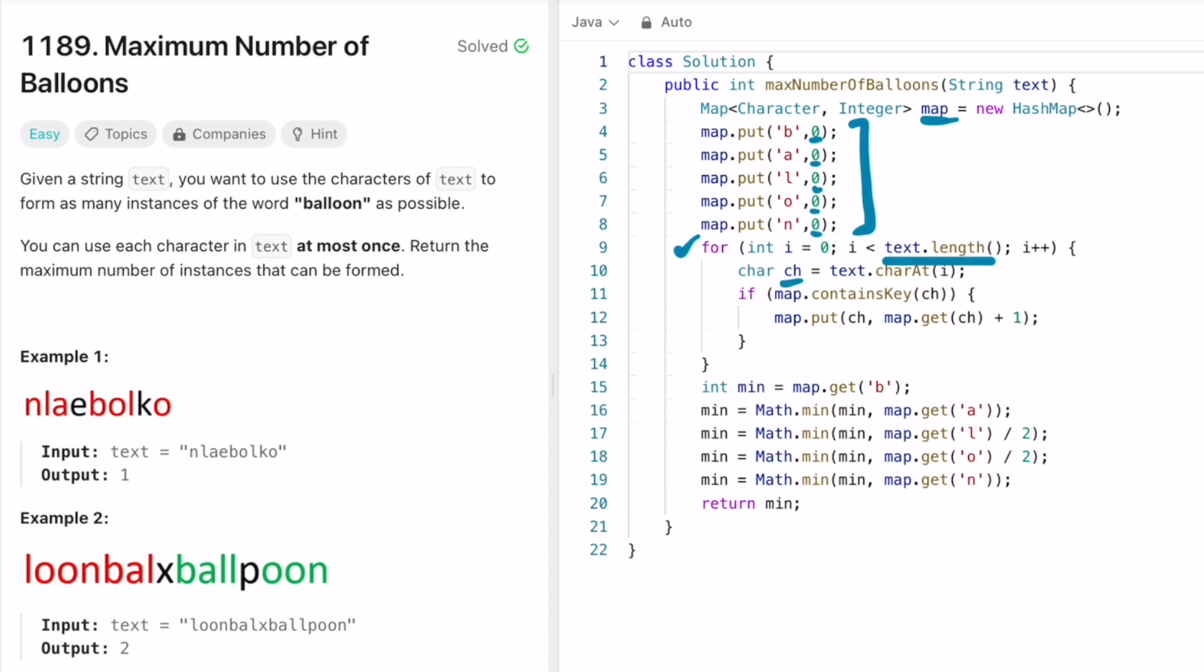Now I'm iterating through the input string text using a for loop. I'm accessing each character at a time and I'm storing it inside the character variable ch. Then I'm checking if that ch which I'm iterating through is present inside the map or not. If it is present, then I'm inserting that character and updating its count to one.